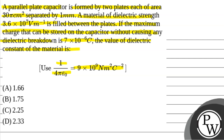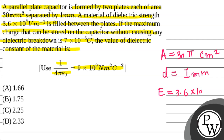So, basically, we have a parallel plate capacitor. The cross-sectional area of the plate is equal to 35 cm square, and the distance between the plates is 1 mm. The dielectric strength, which is equal to the electric field, is 3.6 x 10 to the power 7 V per meter. The maximum charge that can be stored in the capacitor without causing any breakdown is Q equal to 7 x 10 to the power minus 6 C. We have to find the value of the dielectric constant.